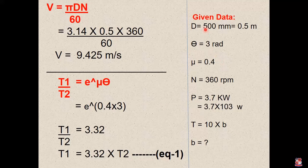So according to data, we just write down the given data. Diameter is given 500 mm. So we have to convert, divide by 1000, so 0.5 meter. Theta is given 3 radian. Mu is given 0.4.